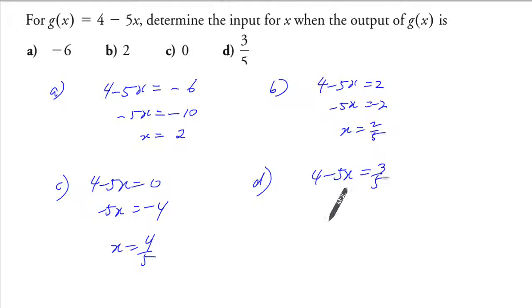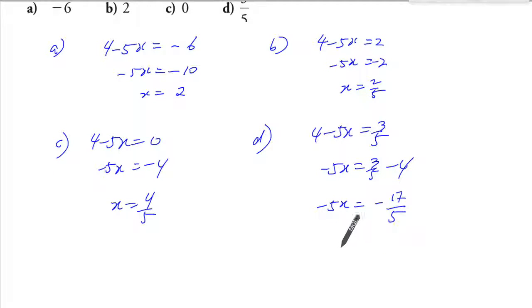For part d, this is equal to 3 over 5. So you get -5x is equal to 3/5 minus 4. That's 20, that's minus 17 over 5. And you divide both sides by 5, you get 17 over 25.